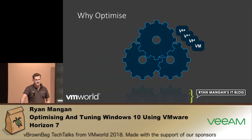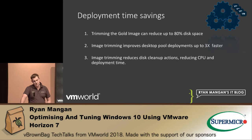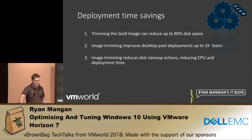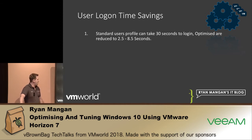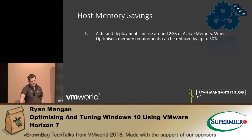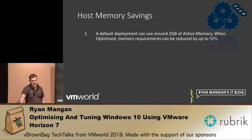So why optimize? What are the real benefits? These are actual facts from VMware and also from internal testing. Trimming the gold image can reduce disk space by up to 80%. Storage has high value these days. If your disk is smaller, spinning up new desktops in a pool is three times faster. Low disk size can also improve CPU performance and overall deployment time. Login time can go from 30 seconds without optimization down to 2.5 to 8.5 seconds after. Active memory utilization can be reduced from 2 GB down to 1 GB — 50% — depending on what you're doing.